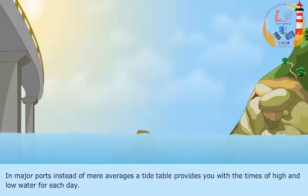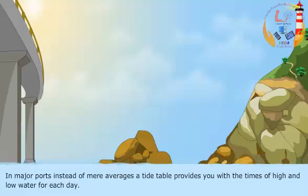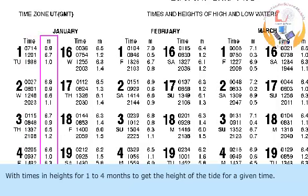In major ports, instead of mere averages, a tides table provides you with the times of high and low water for each day. The most common one looks like this, with times and heights for 1 to 4 months.